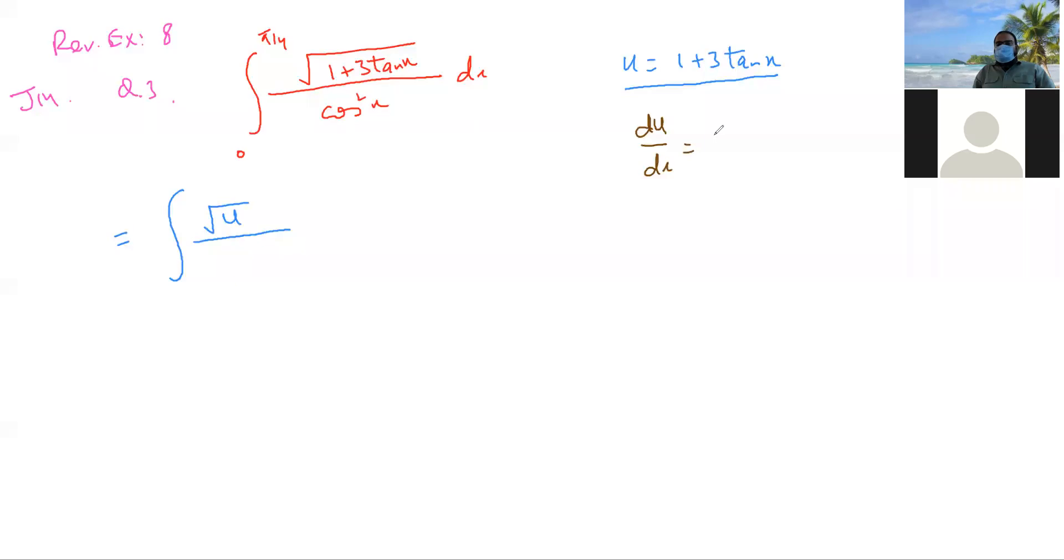Now this gives us 3 secant square x. Now just see that this cos square x, when you move this up here, this can also be written as secant square x. So this cos square x, I have moved this to the numerator.